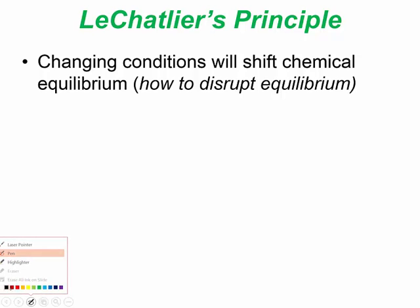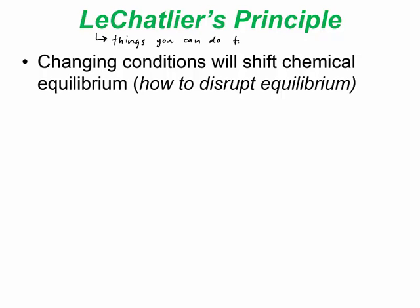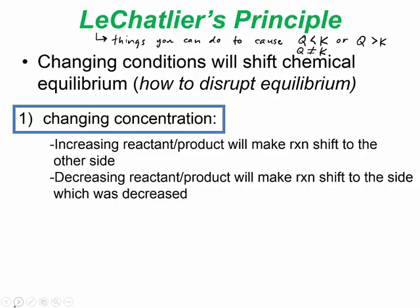Le Chatelier's principle can be rephrased as things you can do to cause Q to be less than K or greater than K — in other words, Q no longer equal to K — which causes the reaction to go one way or the other to reestablish the equilibrium constant ratio. Increasing a reactant or product shifts the reaction to the other side, and decreasing a reactant or product shifts the reaction toward that side.